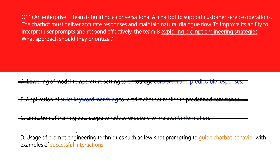We'll move to option D. D says the user's usage of prompt engineering techniques such as few-shot prompting to guide chatbot behavior with examples of successful interactions. Example-driven prompting improves comprehension and response quality. Option D is the right answer — we'll lock it.